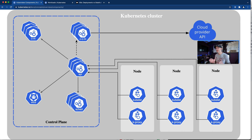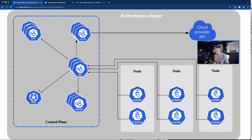The other piece of the control plane worth mentioning is the scheduler. So whenever you give Kubernetes a new task - like run my web server - it will look at the resources you're requesting and then schedule that to be executed on a node that meets the requirements you defined. This is a very important part of getting your applications to run on the right nodes, especially if you have some nodes that provide certain resources and other nodes that don't.